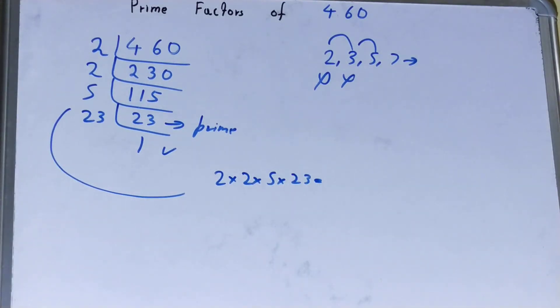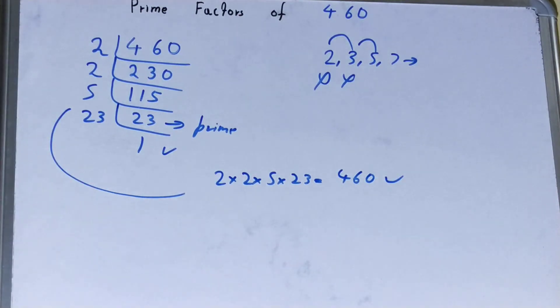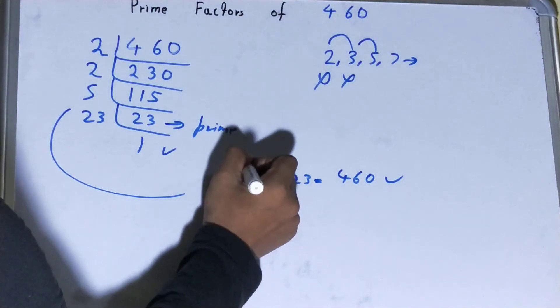If you want to check whether it is right or not, you can multiply them and if on multiplying, you get the number back again, that means your calculation is correct. If not, you need to recheck.